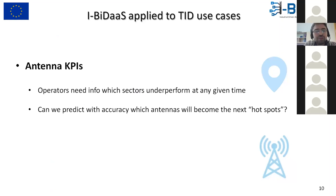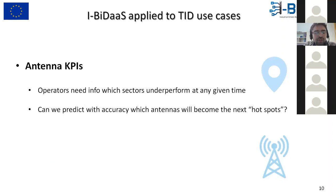I'm now going to focus on the concrete use cases provided by Telefonica and the IBDAS solution, highlighting the challenges from the perspective of data analytics and big data technologies. In the first use case — antenna KPIs — the context is that telecom operators need information about which sectors underperform at any given time in order to provide quality of service. The question is: can we predict with sufficient accuracy which antennas will become the next hotspots?